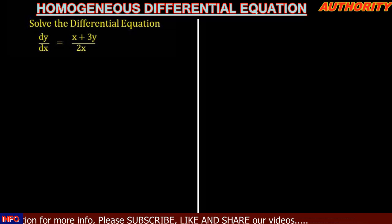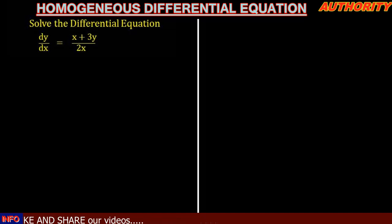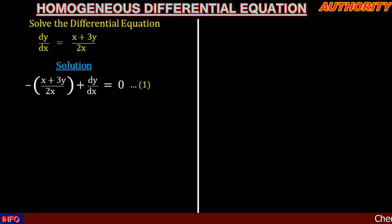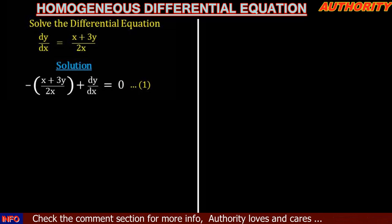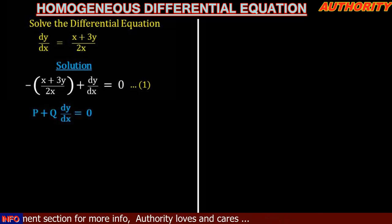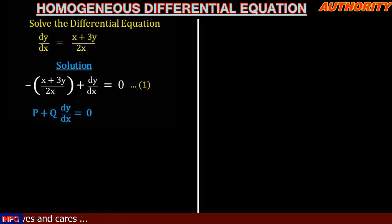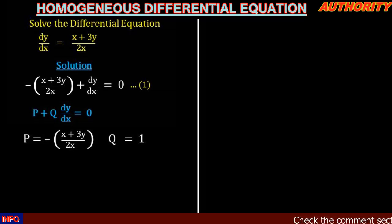Now how are we going to solve this? Let's rearrange this equation. We take the term on the right-hand side to the left, giving us minus (x + 3y)/(2x) plus dy/dx equal to zero. Merely looking at this, we see that it fits the form we call a homogeneous equation, which comes in the form P + Q(dy/dx) = 0, where P and Q are homogeneous functions.